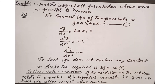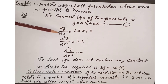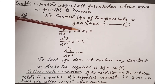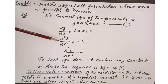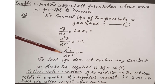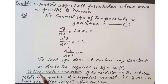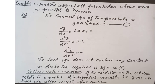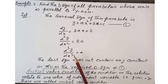Differentiating y = ax² + bx + c: first derivative dy over dx equals 2ax plus b. Second derivative d²y over dx² equals 2a. Third derivative d³y over dx³ equals 0. This equation d³y over dx³ = 0 is the required differential equation of all parabolas whose axis is parallel to the y-axis, since all three arbitrary constants have been eliminated.